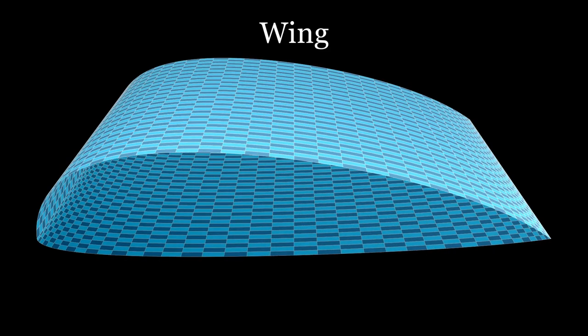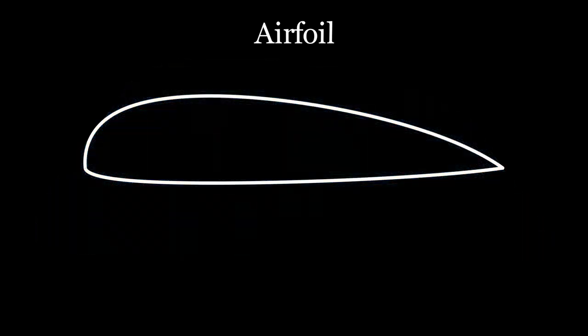We can start with the most obvious, the wing. Then we can take a slice and form the airfoil. The airfoil has a few important properties, such as the cord line, which is the line spanning from the leading edge to the trailing edge.